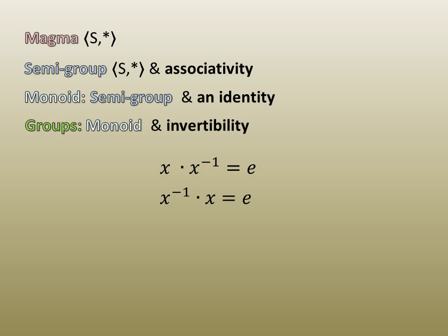You would usually see the inverse of x written like this. For the general case, the identity element of a monoid or group is traditionally denoted by the letter e. So, a operated on inverse a produces the identity, as does inverse a operated on a.